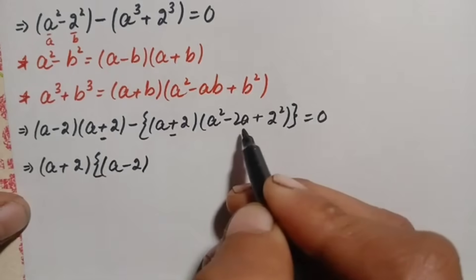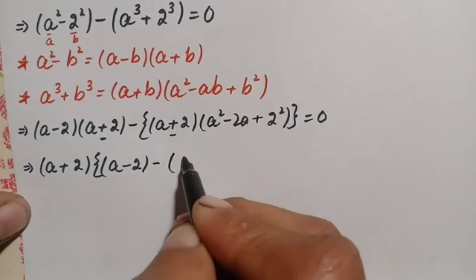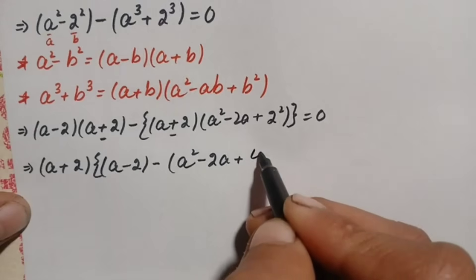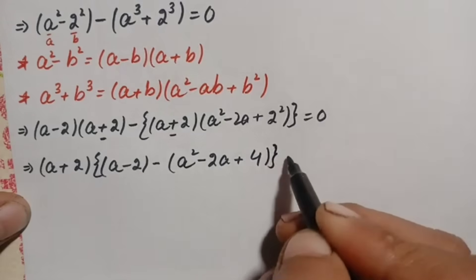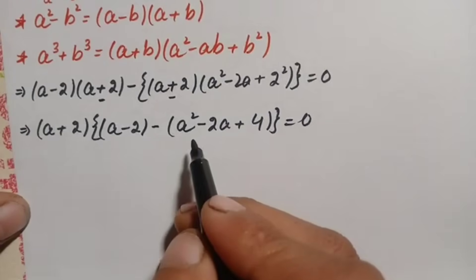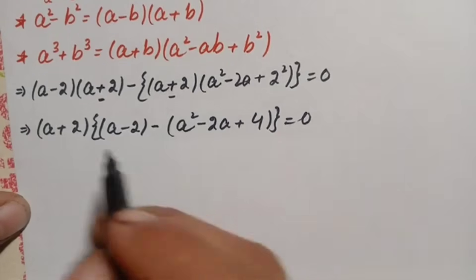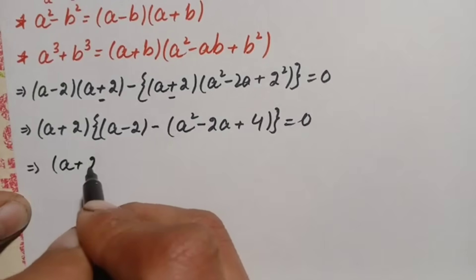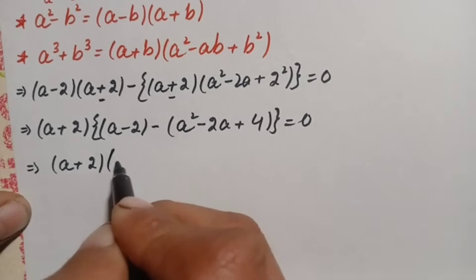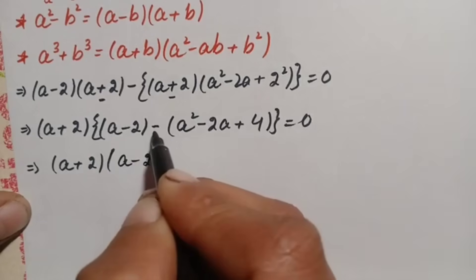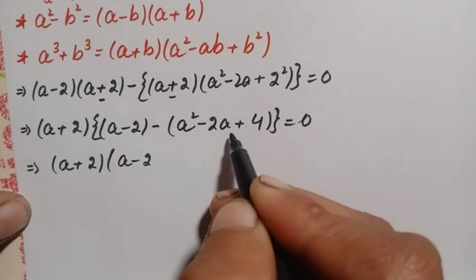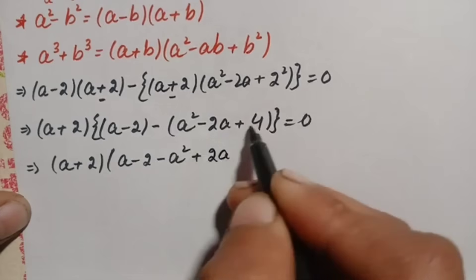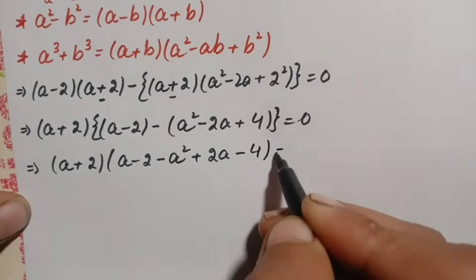The remaining quadratic expression from the second term becomes negative a squared minus 2a plus 4, equal to zero. We then multiply the negative sign inside the parenthesis, changing the sign of each term: it becomes negative a squared, positive 2a, and negative 4.